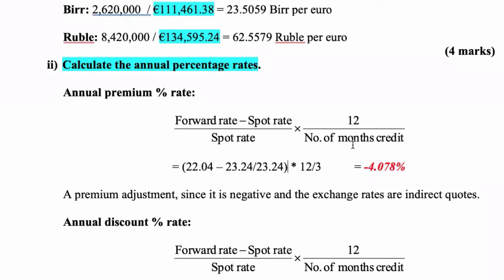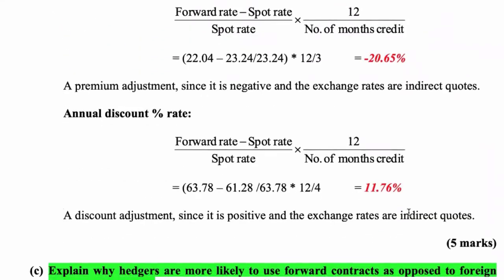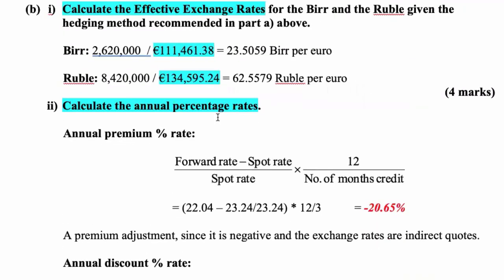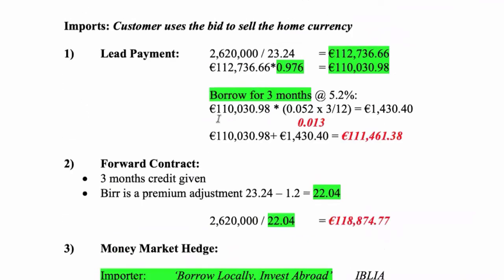That will give us a negative 20.65%, after multiplying by 100. Just a correction — I reckon the discount rate is correct and it's a discount adjustment. Again, you'll find that in your part where you have the forward minus the spot, so you don't have to think about this again — just go back to where you did your forward contract.